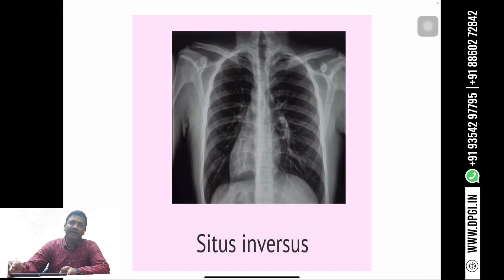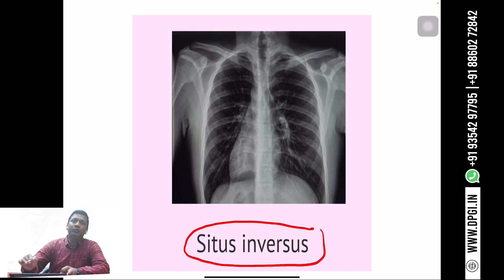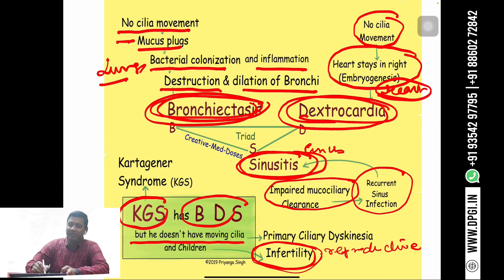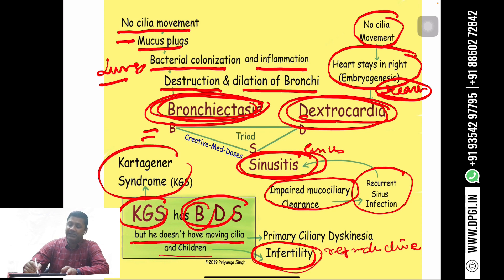On X-ray in Kartagener syndrome, we see dextrocardia, which appears as situs inversus. To remember Kartagener syndrome, use this mnemonic: KGS has BDS but does not have moving cilia or children. KGS stands for Kartagener syndrome; B for bronchiectasis, D for dextrocardia, S for sinusitis.